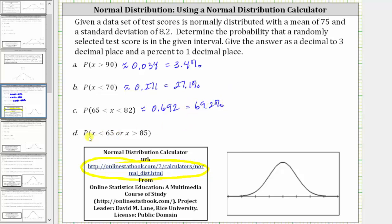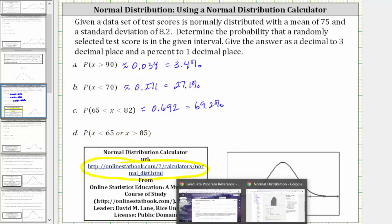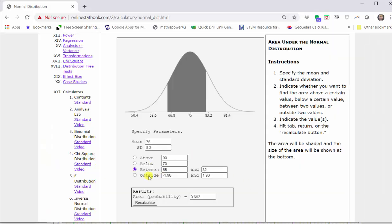For D, we're asked to find the probability that X is less than 65 or X is greater than 85. To find this probability, we select outside, then enter the test scores of 65 and 85. Press recalculate.